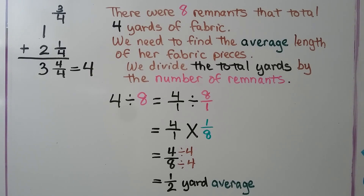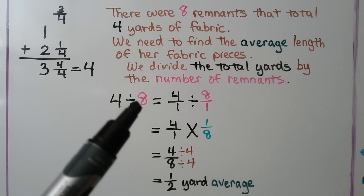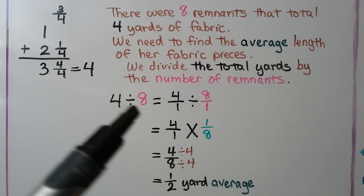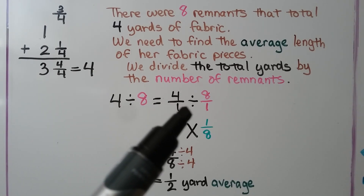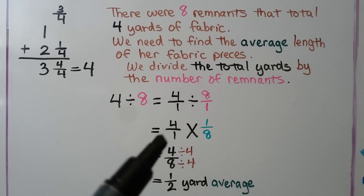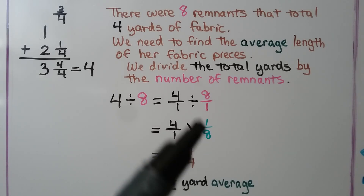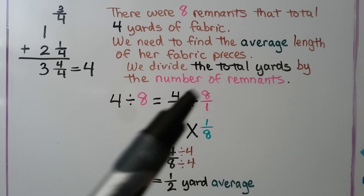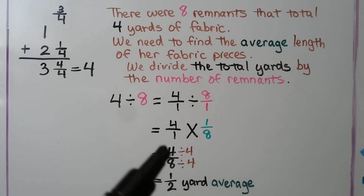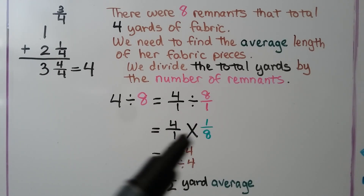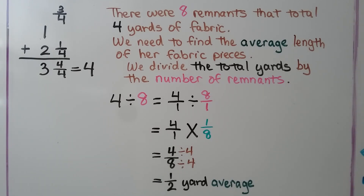We need to find the average length of her fabric pieces. We divide the total yards — four — by the number of remnants, eight. We can write four as four over one divided by eight over one, then multiply by the reciprocal: four over one times one-eighth. Four times one is four, and one times eight is eight, giving us four-eighths. We simplify by dividing numerator and denominator by the greatest common factor, four, and get a one-half yard average for the length of Sophia's remnants.